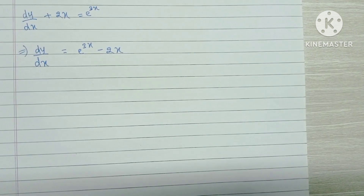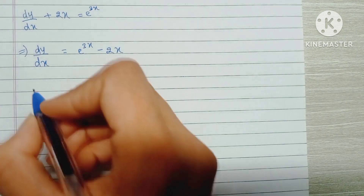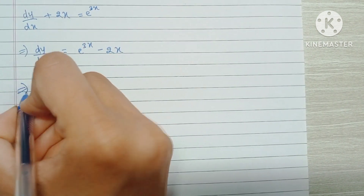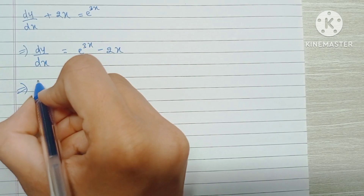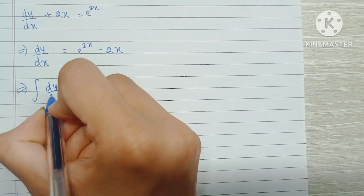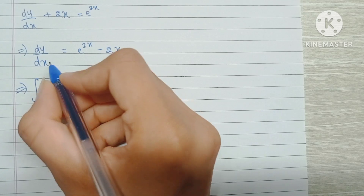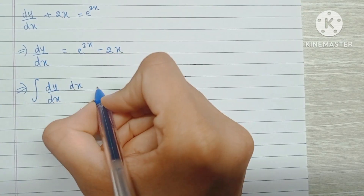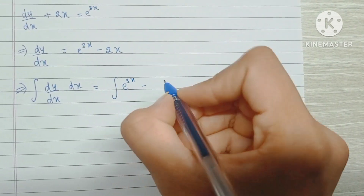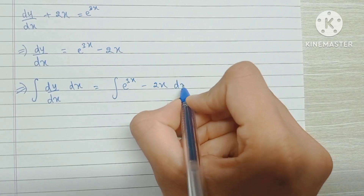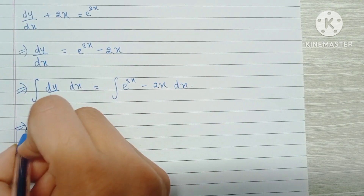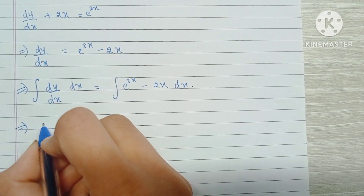Now to remove any differential, the easiest way is to integrate both sides. So we're going to be integrating both sides with respect to x because we have dy/dx. We get the integral of e raised to 3x minus 2x dx. The left side automatically becomes y.